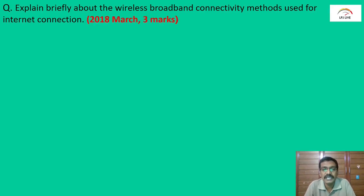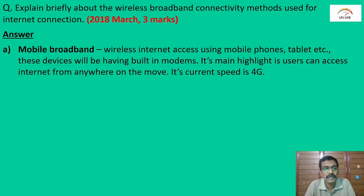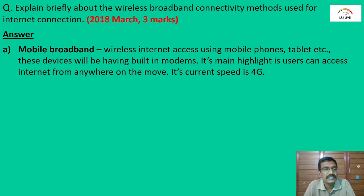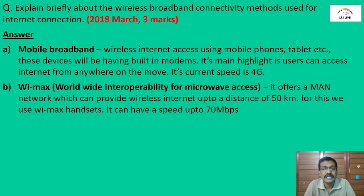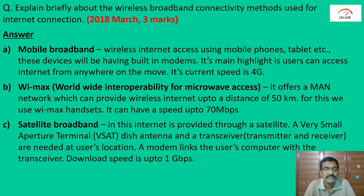Explain briefly about wireless broadband connectivity methods used for internet connection. The first is mobile broadband — wireless internet is available in mobile phones and tablets through in-built modems, providing internet on-the-move. Current speeds are 4G and 5G. The second is WiMAX — Worldwide Interoperability for Microwave Access — which covers a Metropolitan Area Network (MAN) range of up to 50 km with speeds of 70 Mbps.